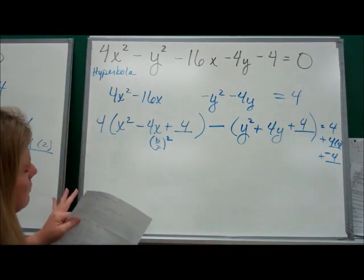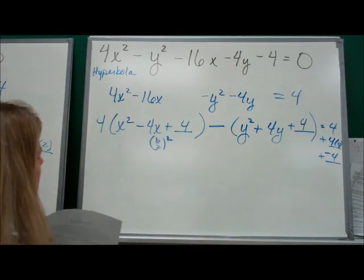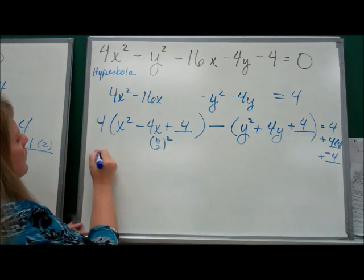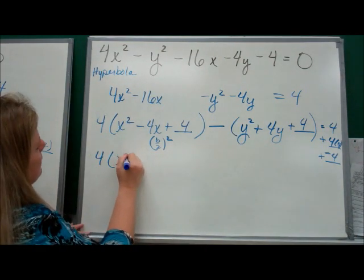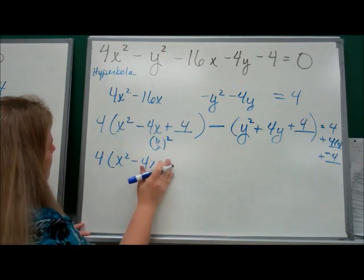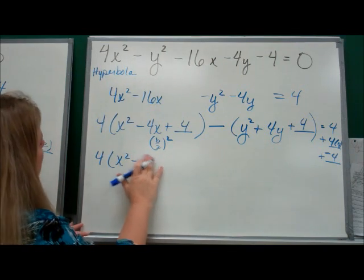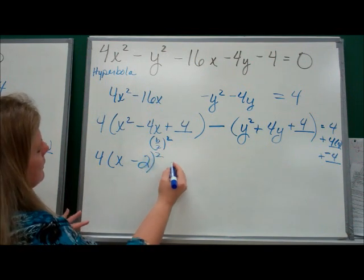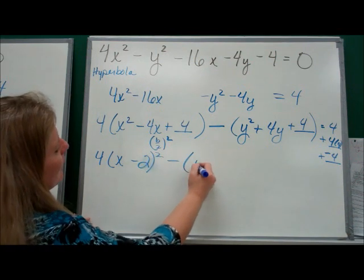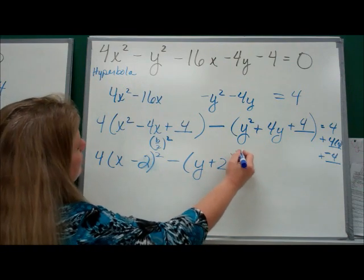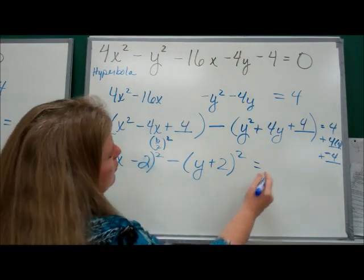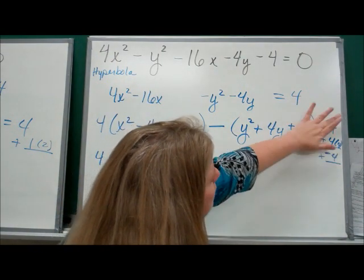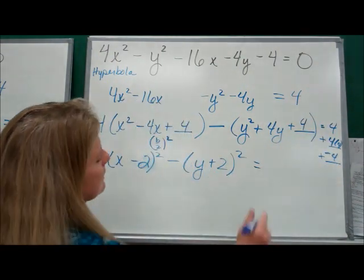Now, factor your perfect square trinomials. Add up over there. So this is 4 times x squared minus 2 squared minus y plus 2 squared equals, well, this positive 4 and this negative 4 are going to cancel each other out. 4 times 4 is 16.